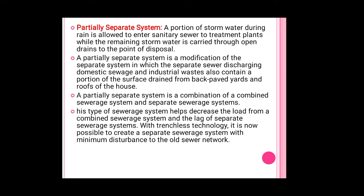A portion of stormwater during rain is allowed to enter the sanitary sewer to the treatment plant, while the remaining stormwater is carried through open drains to the point of disposal. A partially separate system is a modification of the separate system, in which the separate system discharging domestic sewage and industrial waste also contains a portion of the surface drain from backyard paved yards and roofs of houses.